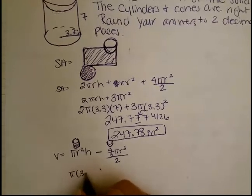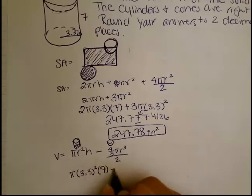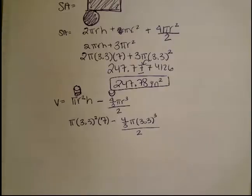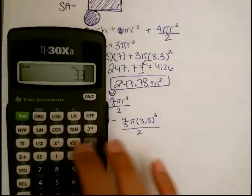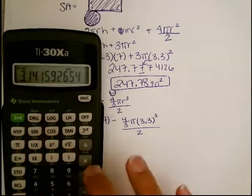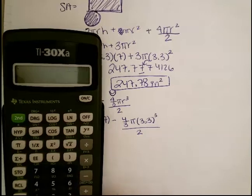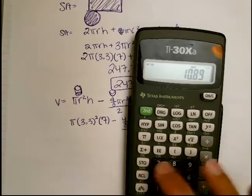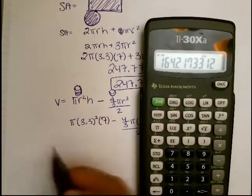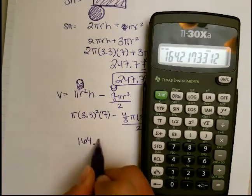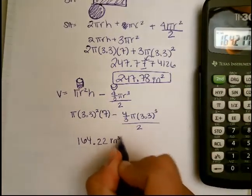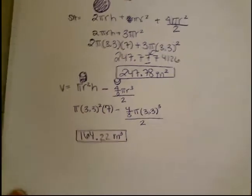Now plugging in our numbers. Pi r squared times my height of 7, minus 4 thirds pi r cubed divided by 2. 3.3 cubed times 4 thirds equals, divide by 2 equals, make it negative, plus parentheses 3.3 squared times 7 times pi parentheses equals. And I got that my volume is 164.217, so it's been rounded to 164.22. And this was in inches, and volume is always cubed. 164.22 inches cubed.